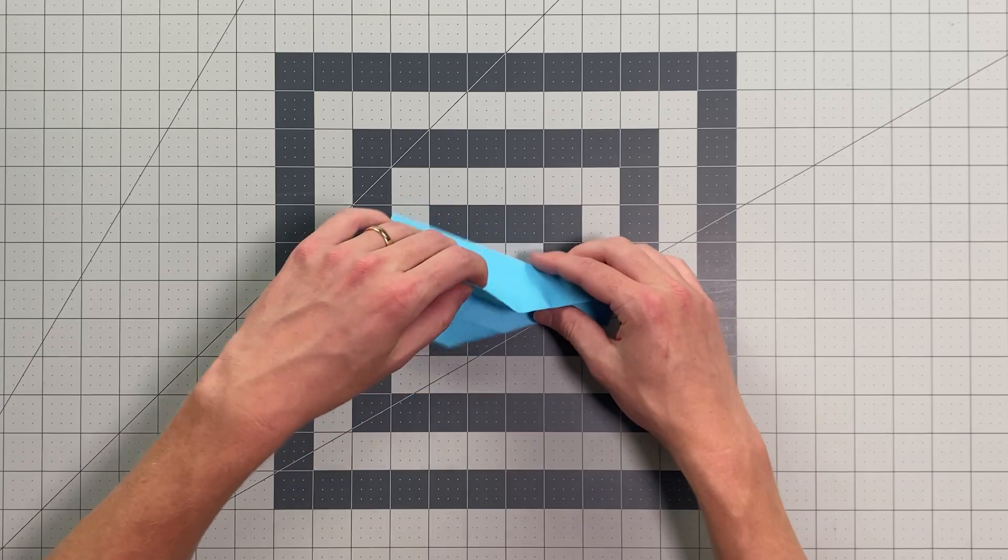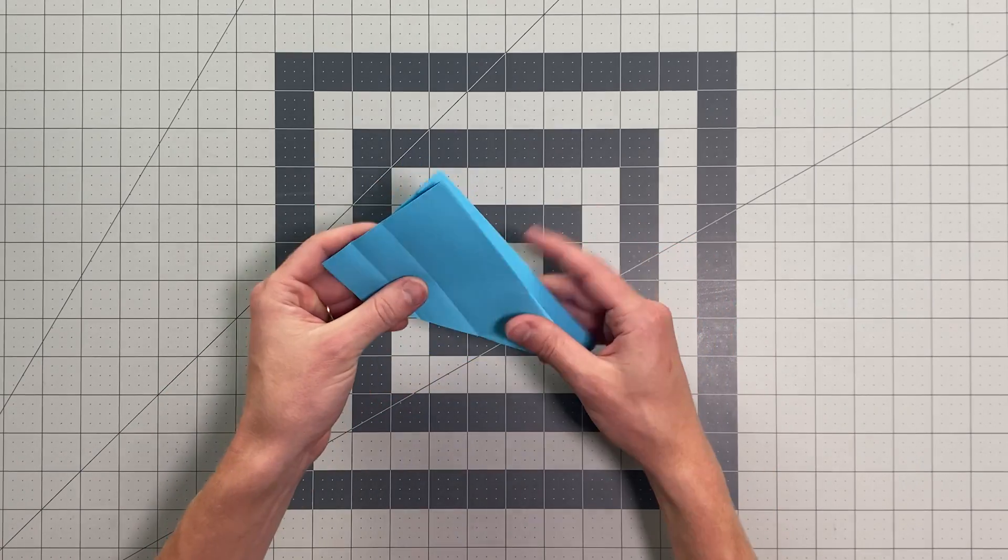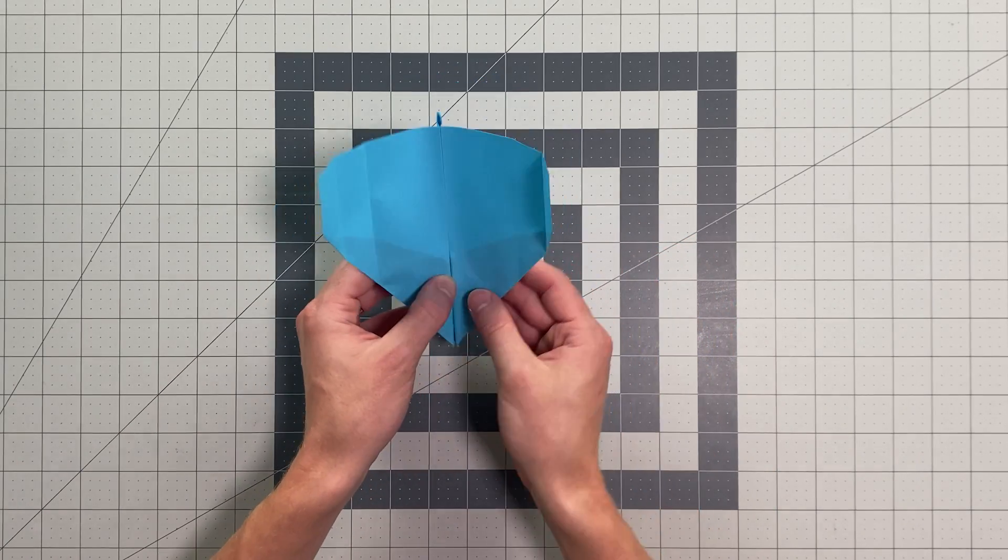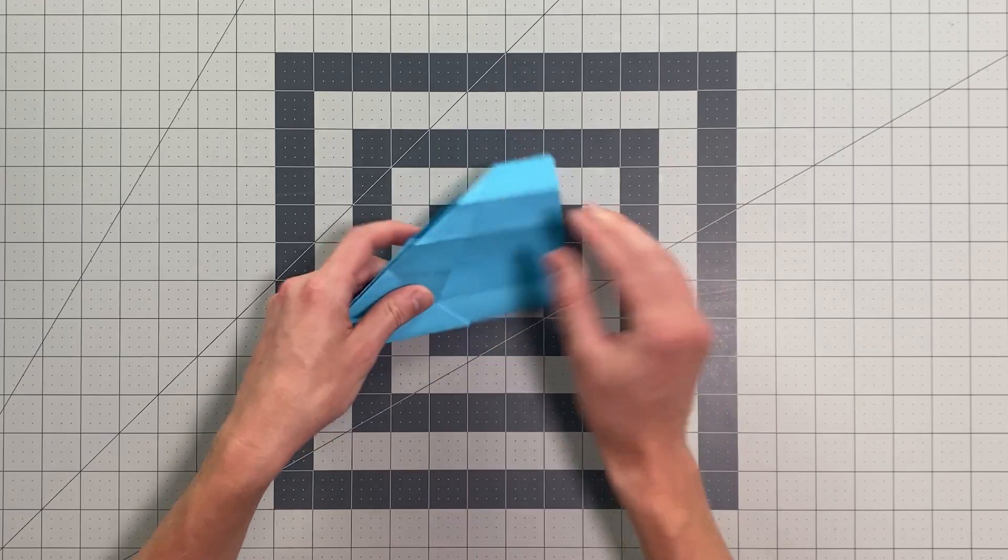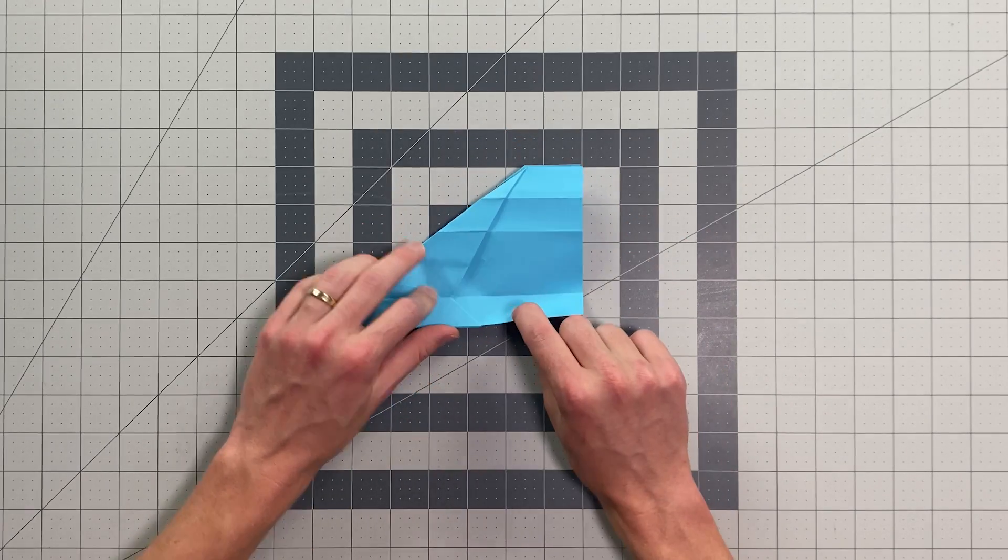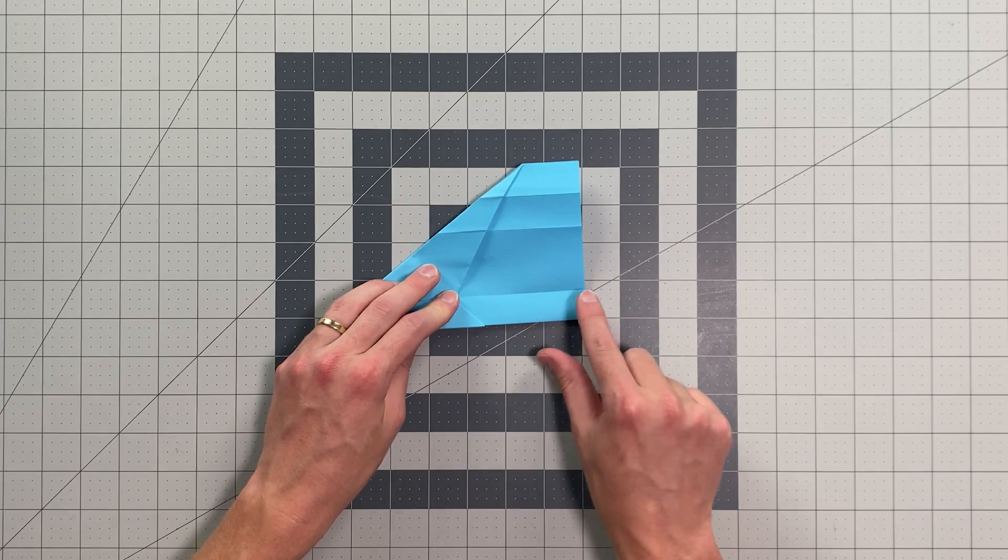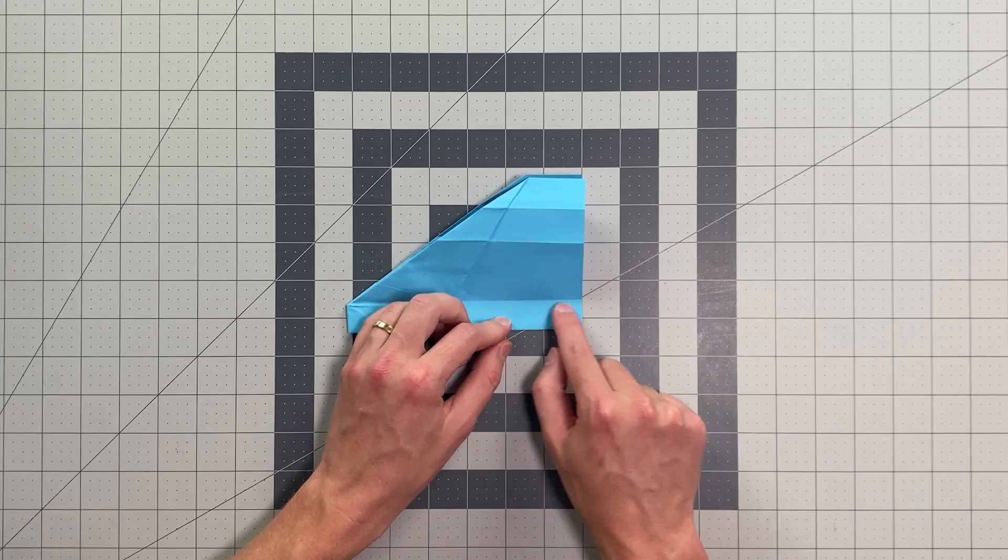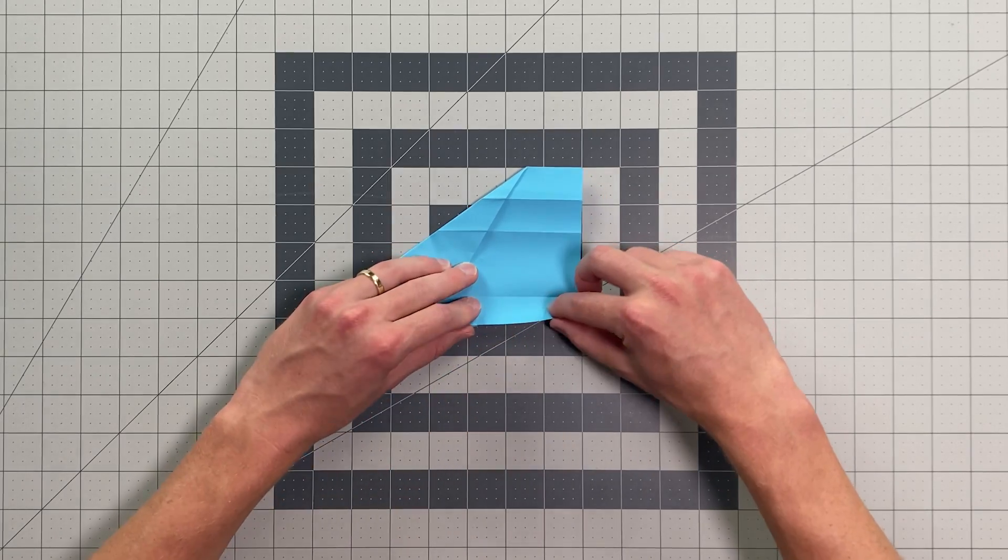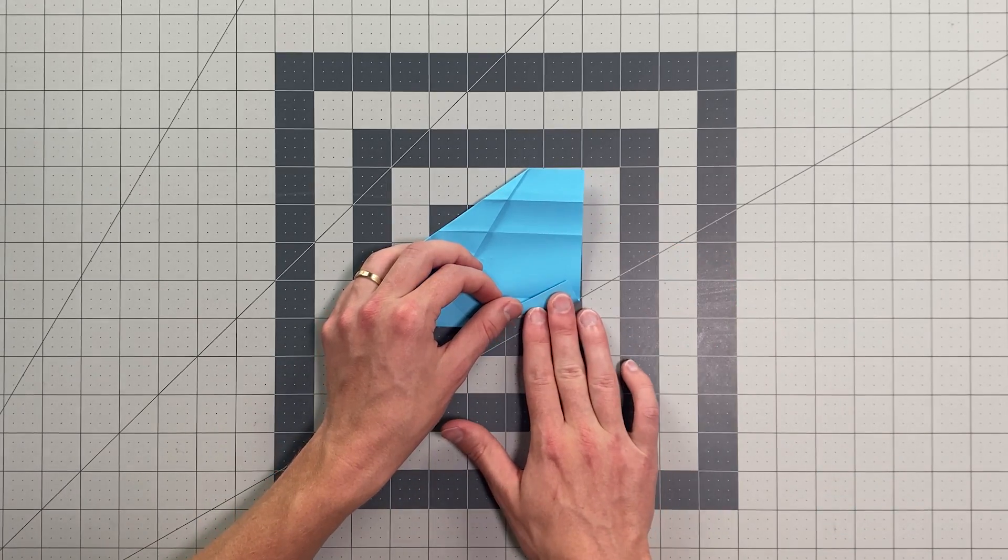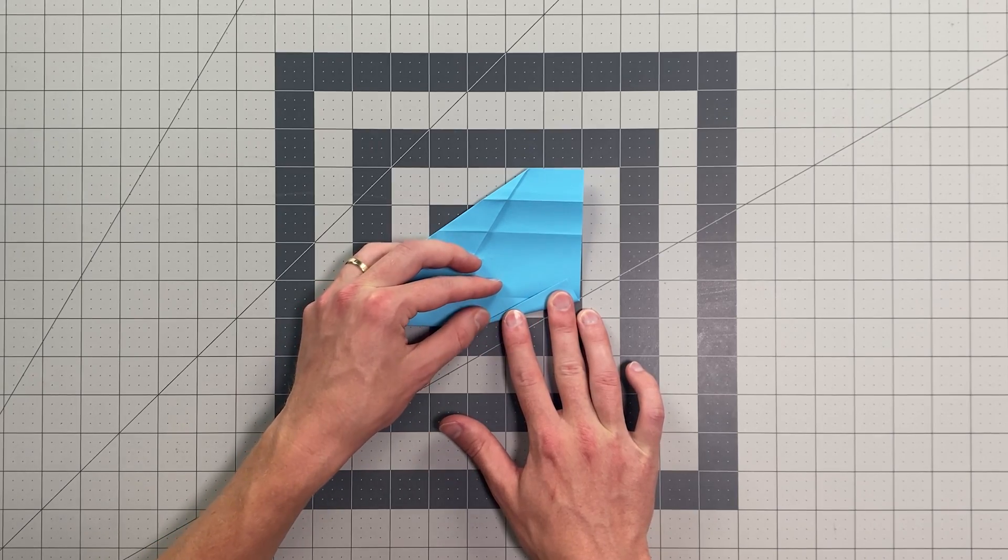Okay, and now I can unfold all that, open the paper back up into this position here. And I'm going to make my fin. So I'm folding from this point here to the point where that crease intersects the back edge. So just like this, I'm holding both layers there.